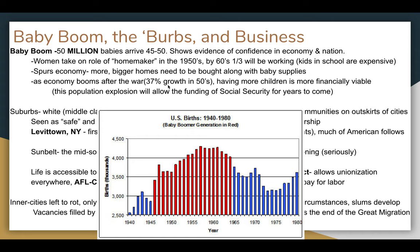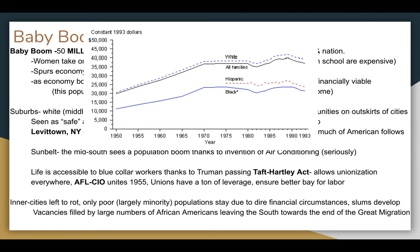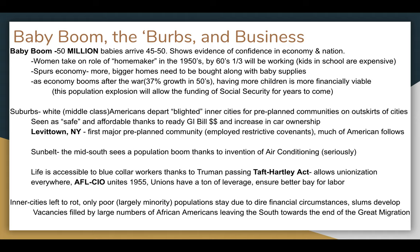The economy is going to boom after the war. By the time we get into the Eisenhower presidency and the Korean War has ended, it's going to grow 37 percent in the 1950s, which is absolutely bonkers. Having children is more financially viable, and this population explosion is what is going to fund Social Security for years to come. I want to point out that the average income for white families is going to rise a lot more than a similar but lower trend for African Americans and Hispanic people — white families benefited from the economics of the baby boom far more than minorities did.